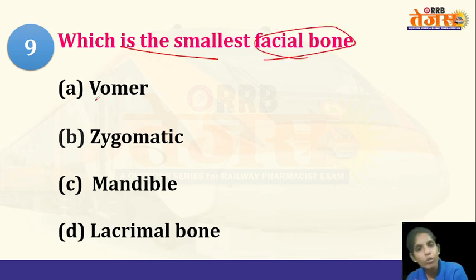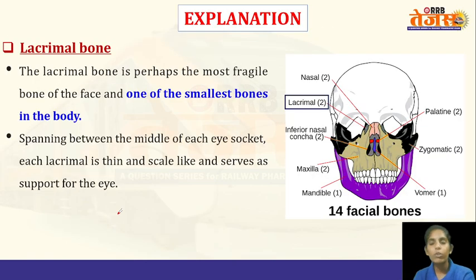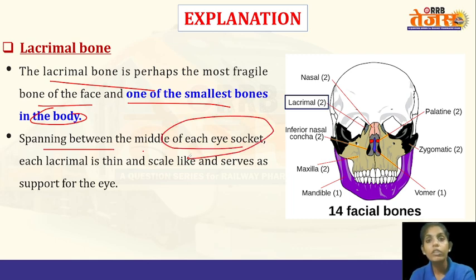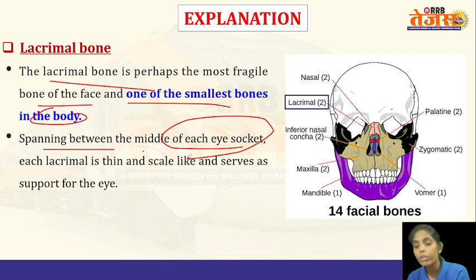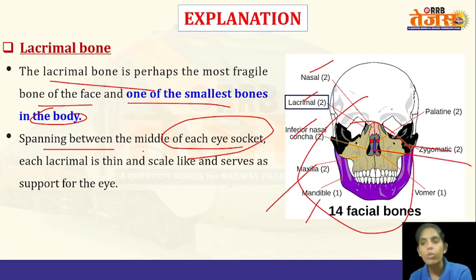Next: which is the smallest facial bone — vomer bone, zygomatic bone, mandibular bone, or lacrimal bone? The answer is the lacrimal bone. The lacrimal bone is the most fragile bone of the face and one of the smallest bones in the body. It spans between the middle of each eye socket and provides support for the lacrimal ducts. The facial bones include nasal bone, lacrimal bone, inferior nasal concha, maxillary bone, mandibular bone, vomer bone, zygomatic bone, and palatine bone.